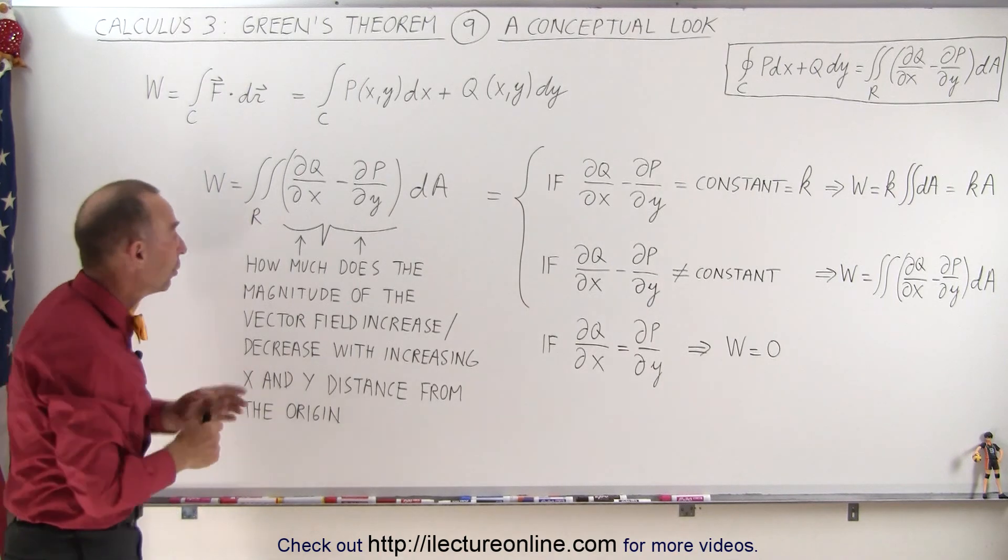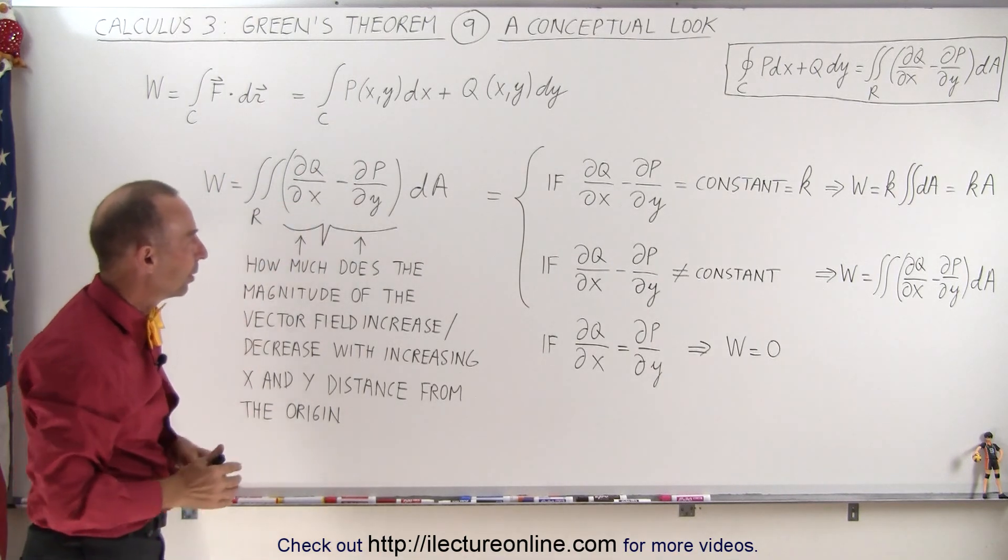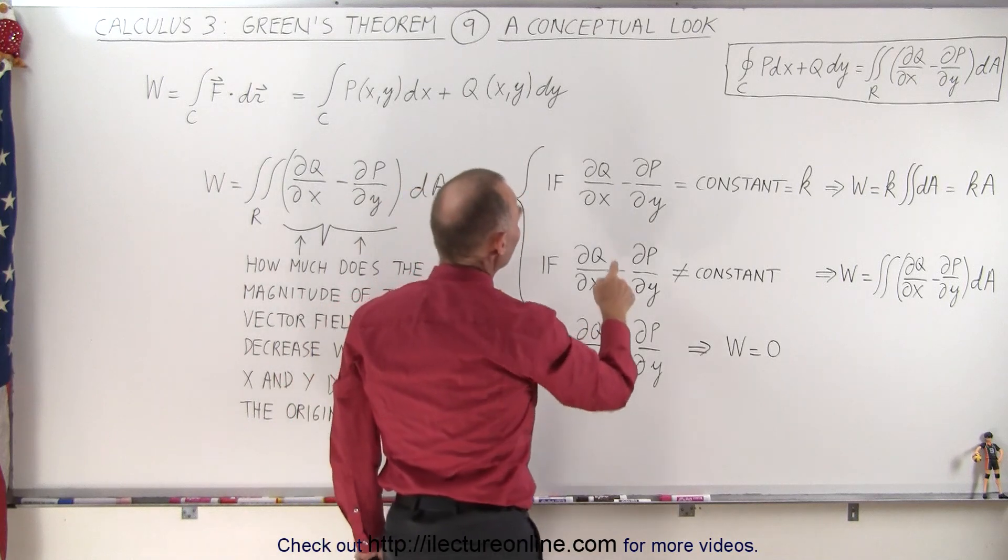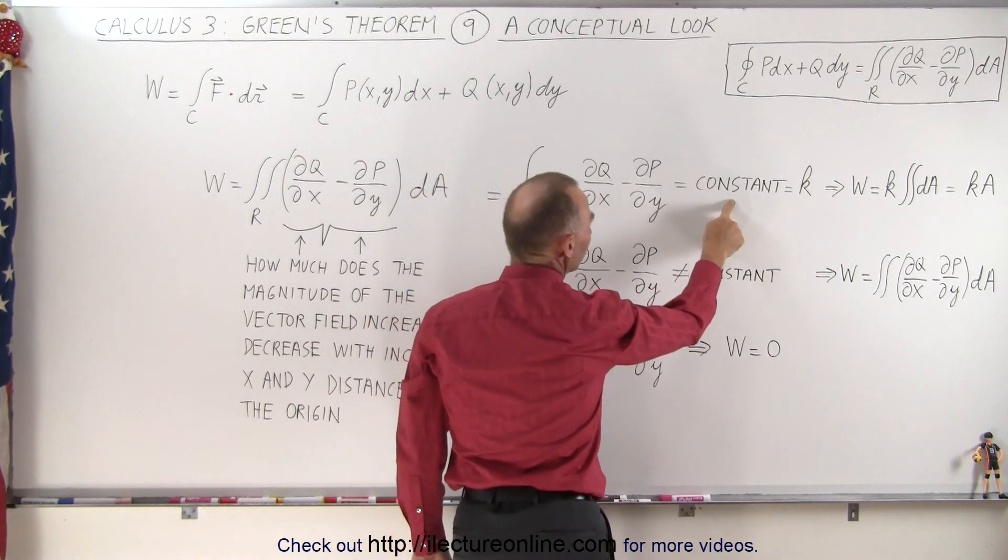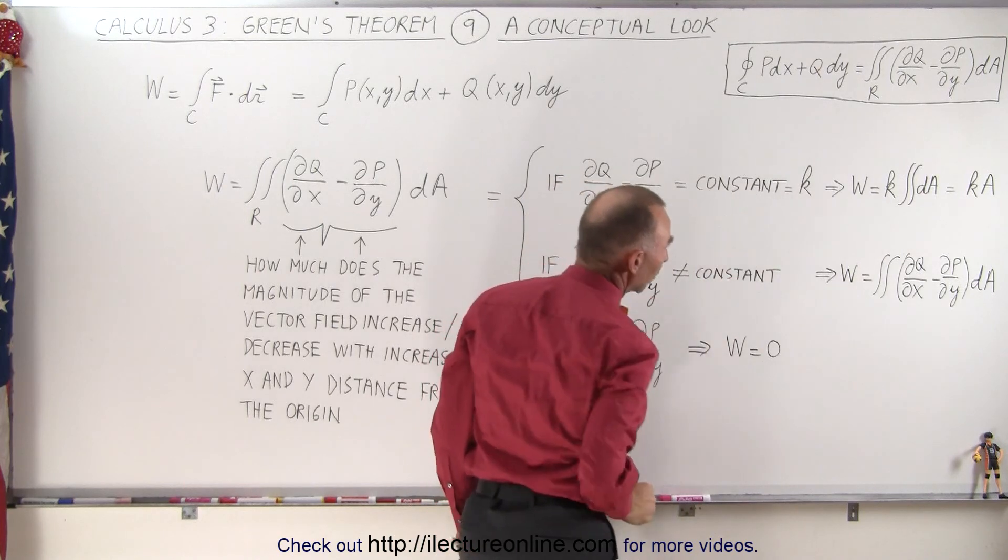Now three things can happen when you evaluate this. The first thing that can happen is that the difference between these two quantities is a constant other than zero, let's call it k.